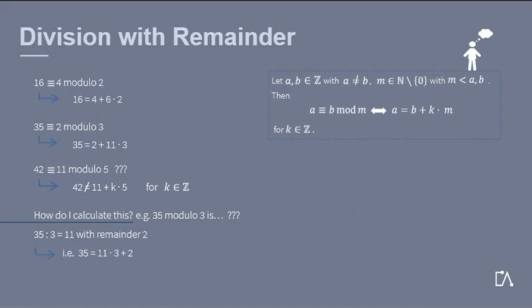Hence, we can write 35 as 11 times 3 with remainder 2, and therefore 35 equals 2 modulo 3. The division with remainder gives us our result as the remainder.